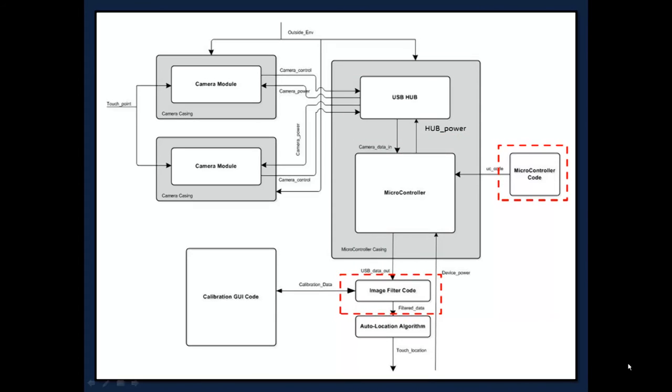The microcontroller code will be written in C. It will process and filter the camera data and convert it to data to be transmitted over USB with all the unnecessary information stripped out. The filtered data will then be used by the auto-location algorithm block to calculate the touch location. The calibration interface will interact with the filter code to ensure that the calculated touches are accurate.